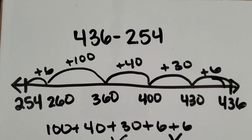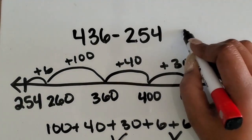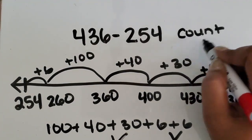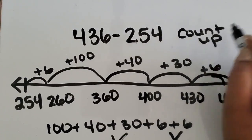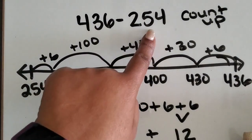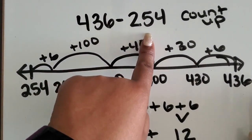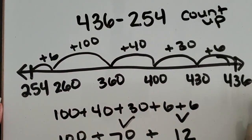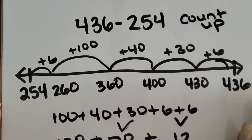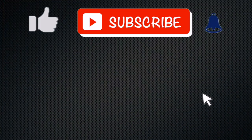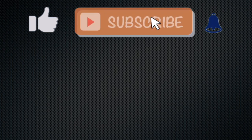So this is a way to count up or add in order to subtract one three-digit number from another three-digit number using an open number line.